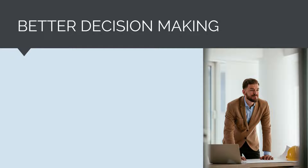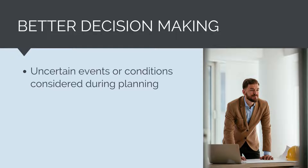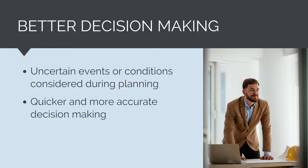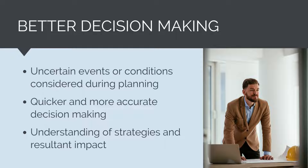Risk management results in better decision-making. Because we have already thought about and considered what can go wrong and the impacts, when uncertain events or circumstances eventuate, we can better choose what to do about it. If we have already considered what effect poor ground conditions will have on the project, when we encounter them, we can more quickly and accurately decide what to do about it. We already know what mitigations and contingency plans are available and the resultant impact of these on the project objectives. Alternatively, if we haven't already considered the risks, when they eventuate, we will be rushed into making a decision, potentially resulting in poorer project outcomes.